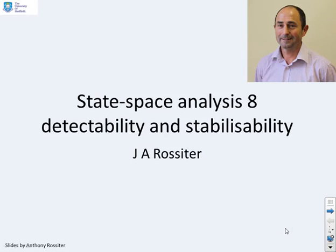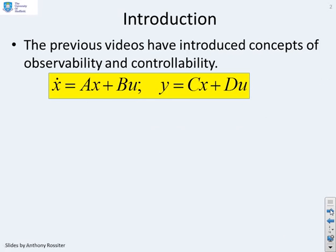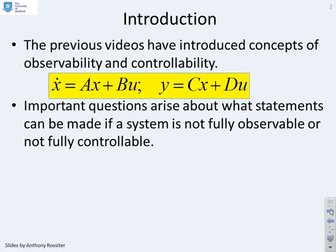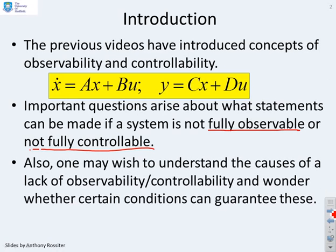This video looks at concepts of detectability and stabilizability. Previous videos have introduced the concepts of observability and controllability for state-space models. An important question arises about what statements can be made if a system is not fully observable or not fully controllable, and you might wish to understand what are the causes of a lack of observability or controllability and whether certain conditions can guarantee these.